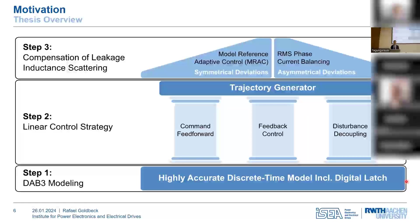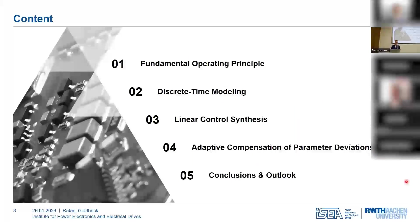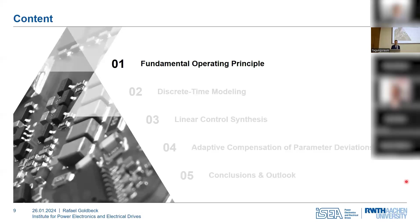To reach these goals I organized my dissertation into three major steps. First, I derived an accurate discrete-time model of the DAB3, which I then used in a second step to develop an optimized linear control strategy, and in a third step I addressed the problem of leakage inductance scattering as a result of manufacturing tolerances. In the interest of time I'll discuss selected aspects, covering the discrete-time modeling, linear control synthesis, and adaptive compensation of parameter deviations, ending with a summary and outlook.